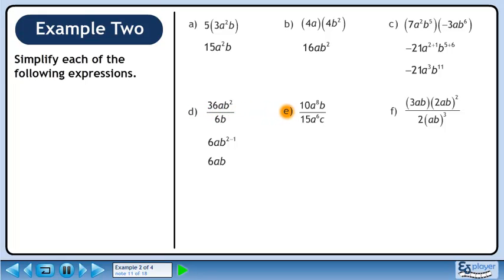Now we'll move on to part e. The answer is 2a squared b over 3c.